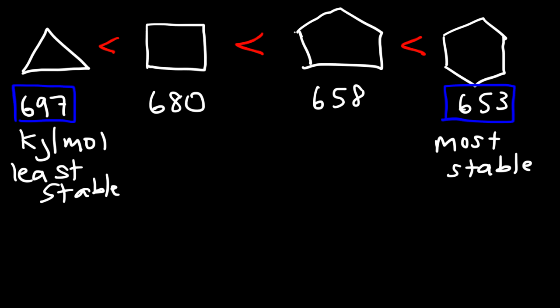Now let's talk about why cyclopropane has so much ring strain, but cyclohexane does not. For an SP3 carbon, such as methane, which has a tetrahedral molecular geometry, the ideal angle is 109.5.